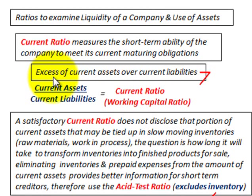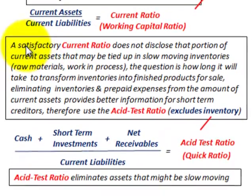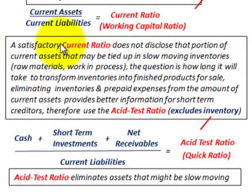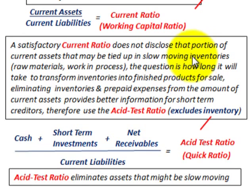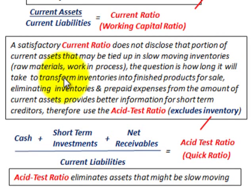The current ratio determines the excess of current assets over current liabilities. However, a satisfactory current ratio does not disclose the portion of current assets that may be tied up in slow-moving inventories, such as raw materials and work in process. The question is: how long will it take to transform these inventories into finished products for sale?